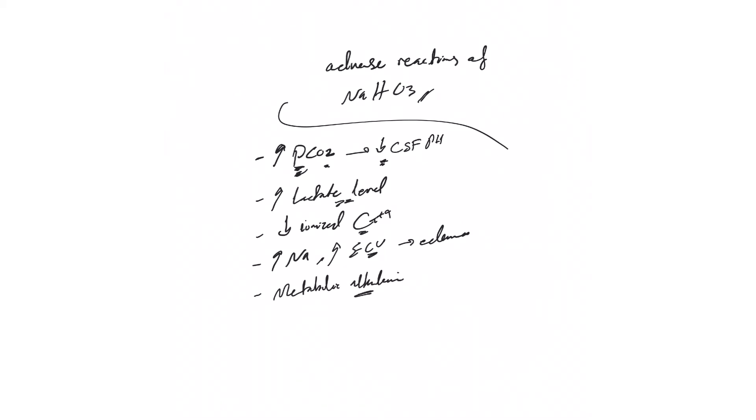We need to monitor that. Don't just leave bicarb drip running without paying attention to the bicarb level. You see it was 20, then 25, then 28, then 30, 31, 32, 35, and nobody pays attention because this can lead to hypokalemia. That's another problem. Whenever infusing bicarb drip, you need to monitor pH and electrolytes including bicarb level.